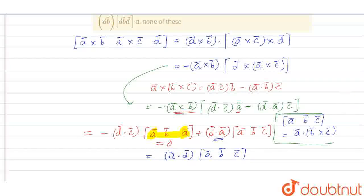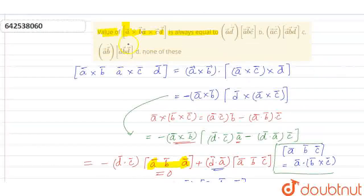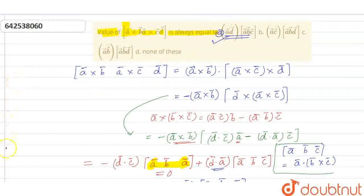We will check which option is correct. A dot D box of A, B, C. So, option A is correct. Thank you.